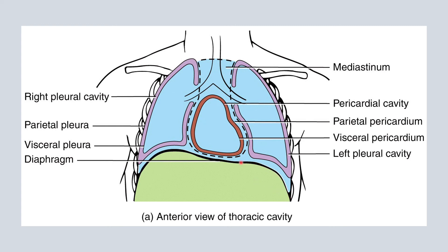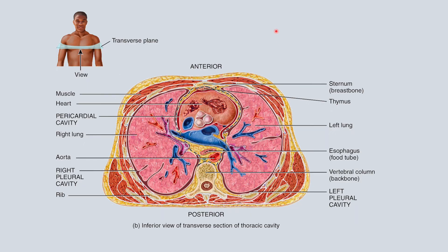We can see the diaphragm here separating the thoracic cavity from the abdominal cavity. Now looking at an inferior view of the transverse section, we can see the heart located here, the pericardial cavity, the lungs, and all the structures. We can also see the right pleural cavity and the left pleural cavity.